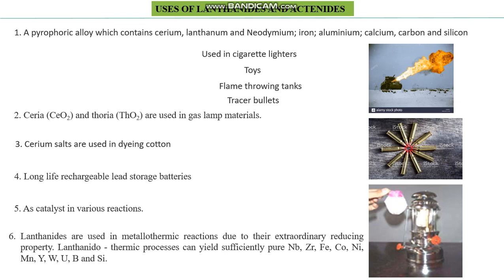Lanthanides and actinides are also used in metallothermic reactions. The term 'metallothermic' is a binomial — metal and thermic — meaning energy is produced through the use of metals. In these reactions, metals are used and a certain amount of energy is produced for useful purposes. Lanthanides and actinides are used here because of their extraordinary reducing power, which we have already discussed.